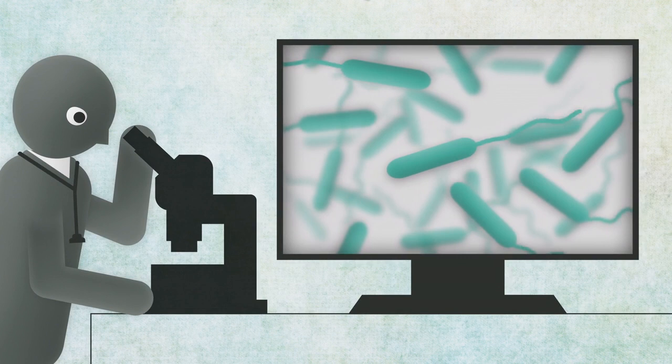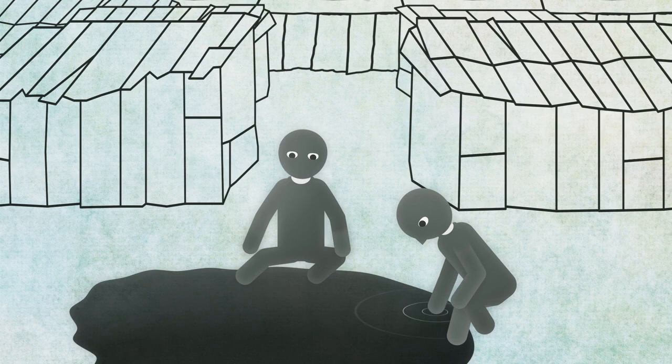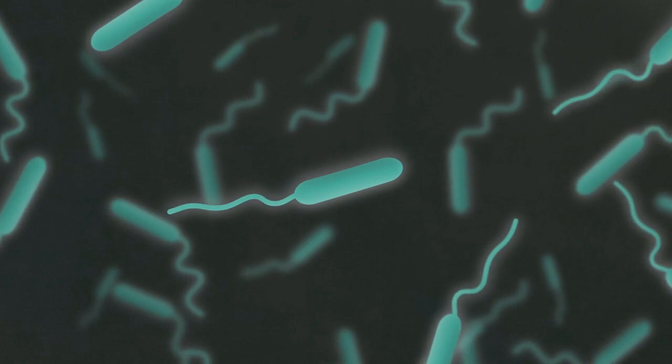Vibrio cholerae is a comma-shaped bacterium that causes cholera. Like most Vibrio bacteria, it is extremely mobile and moves and multiplies at great speed in water.